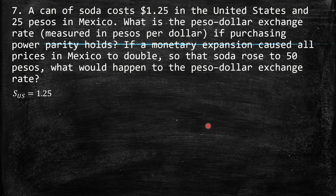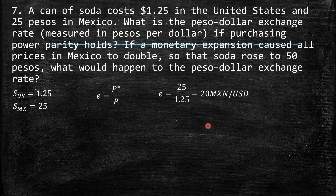Question 7: a can of soda costs $1.25 in the United States and 25 pesos in Mexico. What is the peso-dollar exchange rate measured in pesos per dollar? Purchasing power parity means the cost is the same everywhere, based on the law of one price. The nominal exchange rate equals foreign prices over domestic prices: 25 over 1.25, which gives us 20 Mexican pesos per dollar.